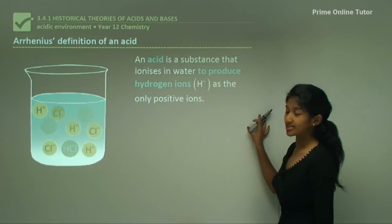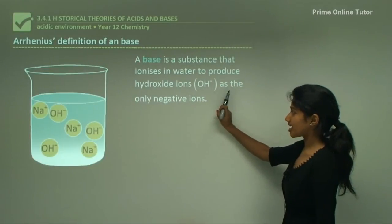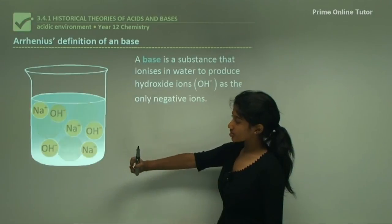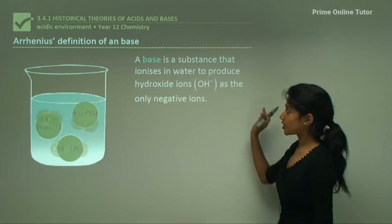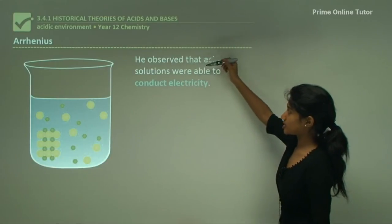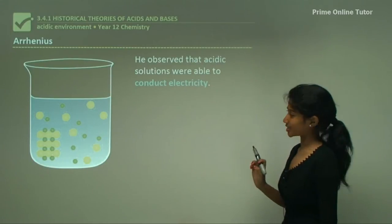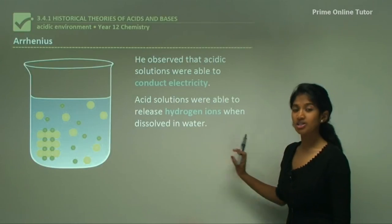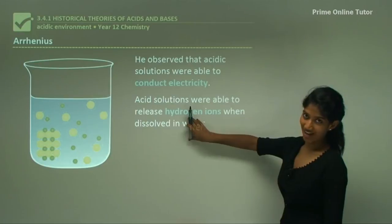Arrhenius also defined bases: a base is a substance that ionizes in water to produce hydroxide ions as the only negative ion. For example, sodium hydroxide ionizes to form sodium ions and hydroxide ions, where the hydroxide ion is the negative ion. He observed that acidic solutions were able to conduct electricity due to the presence of ions, and that acids release hydrogen ions when dissolved in water.